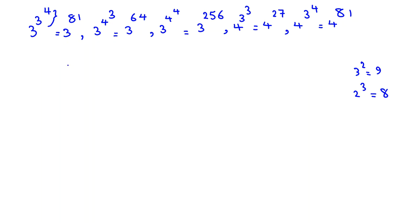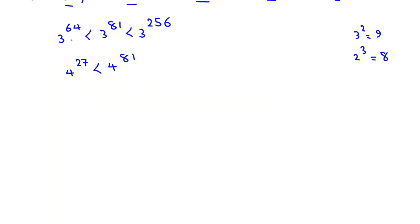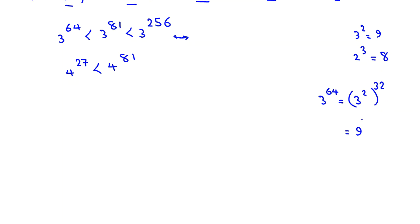We have three expressions with base 3: 3 to the 81, 3 to the 64, and 3 to the 256, which share the same base. For 3 to the 64, I can write it as 3 squared to the 32, using the power rule, which gives 9 to the 32. And for 3 to the 81, using the power rule: 3 to the 81 equals 3 times 3 to the 80, and 3 to the 80 equals 3 squared to the 40, so it becomes 3 times 9 to the 40.